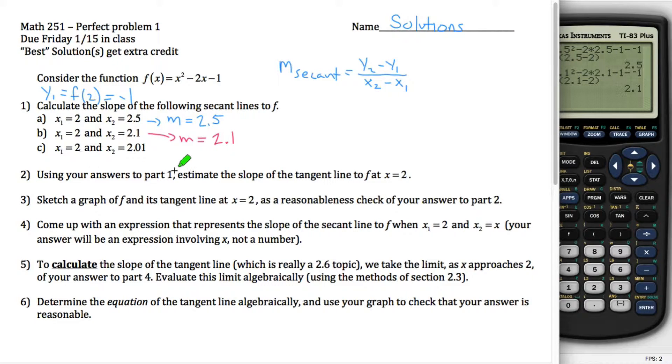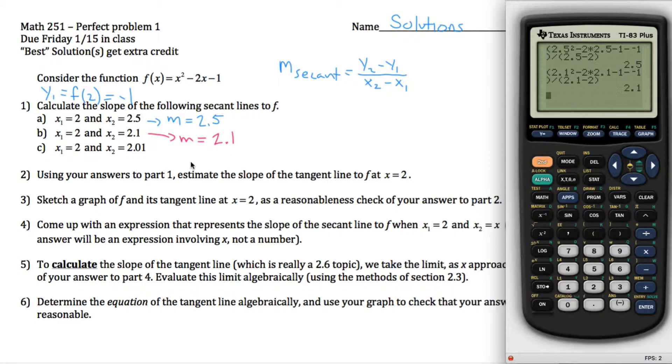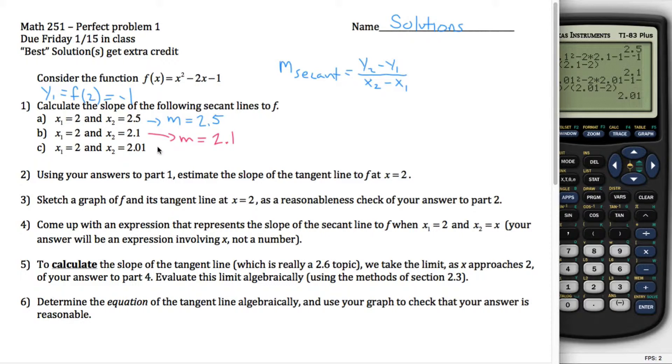I'm going to do that one more time. Same idea except now x2 is 2.01, so I'm going to again pull up that last entry. I want to change all the 2.1s to 2.01s, so I'm going to insert, second, and then delete allows me to insert a zero. Now it says 2.01. Same idea here. If I hit enter, it gives me 2.01.